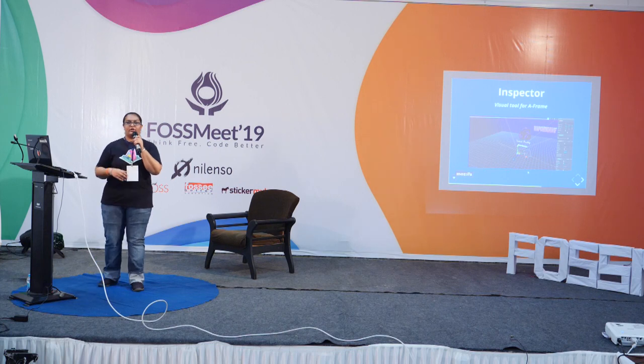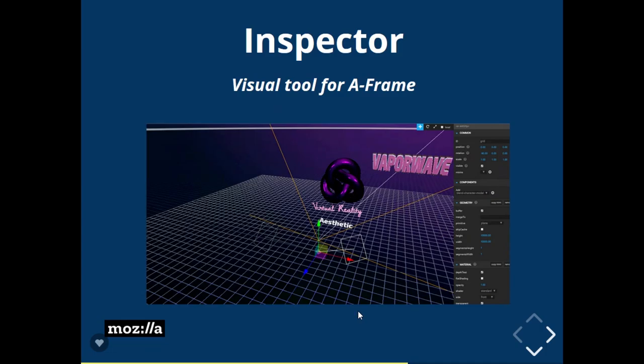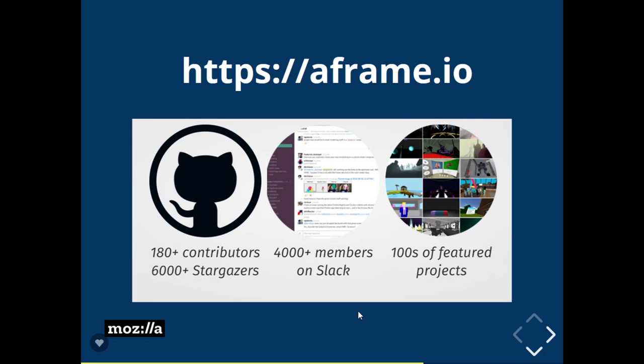The very interesting part about A-Frame is the inspector. When the application is in a running state, just click Control-Alt-I and the inspector opens, showing you the values. If you want to change the position, rotation, or scale, you can make and view the changes at runtime itself — it becomes very easy when you develop. You can refer to A-Frame.io for more extended details, documents, and version updates.